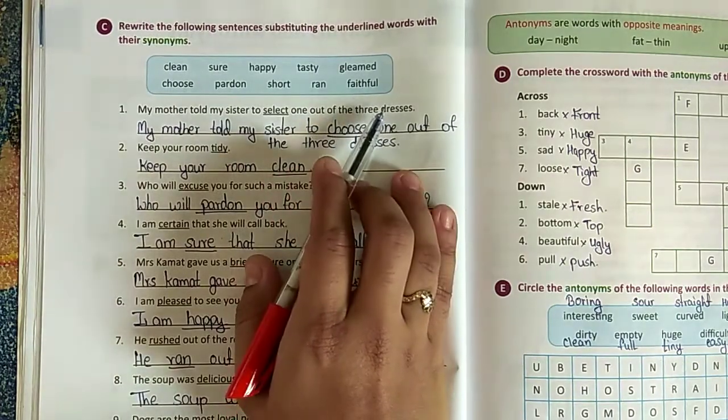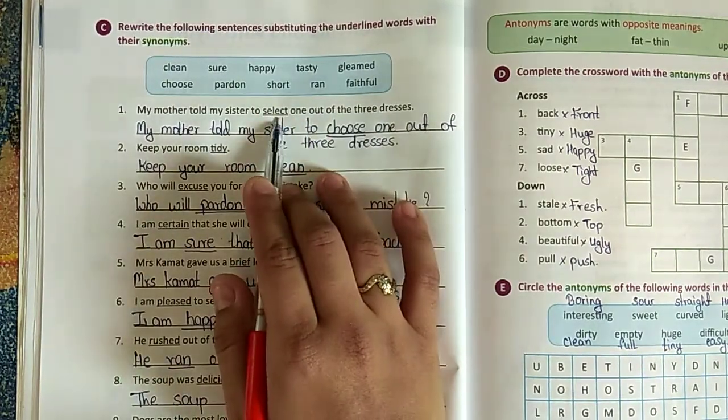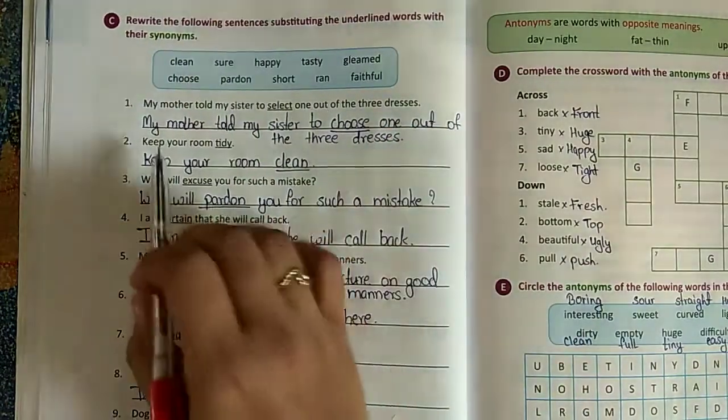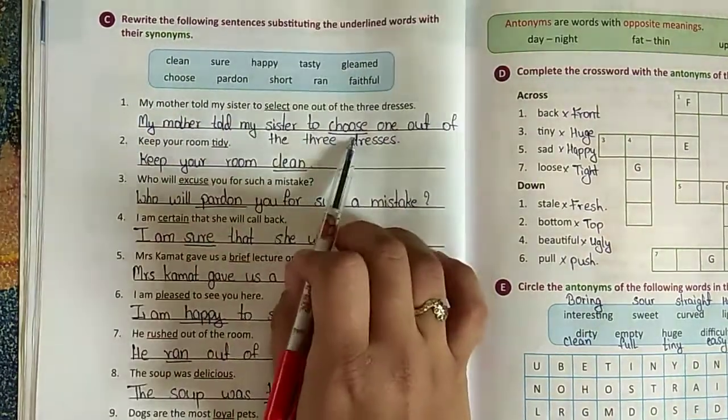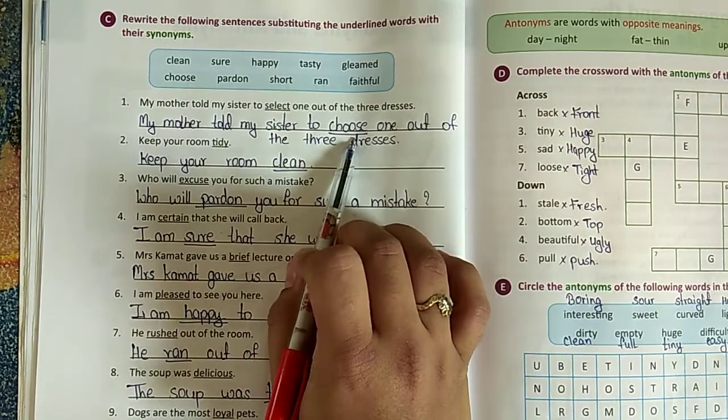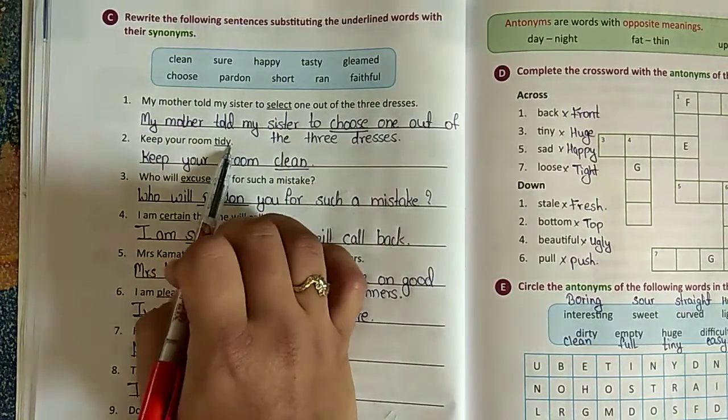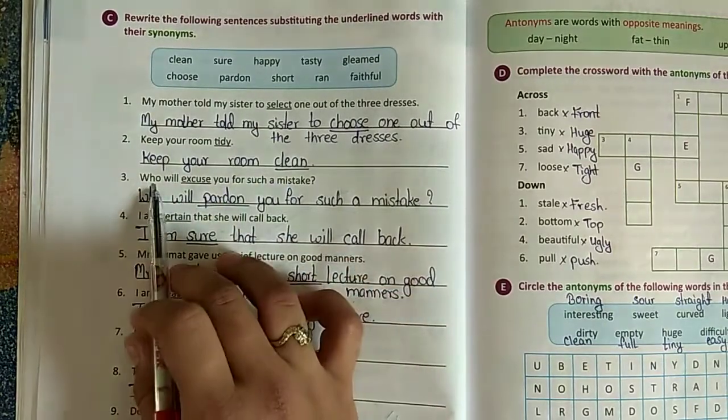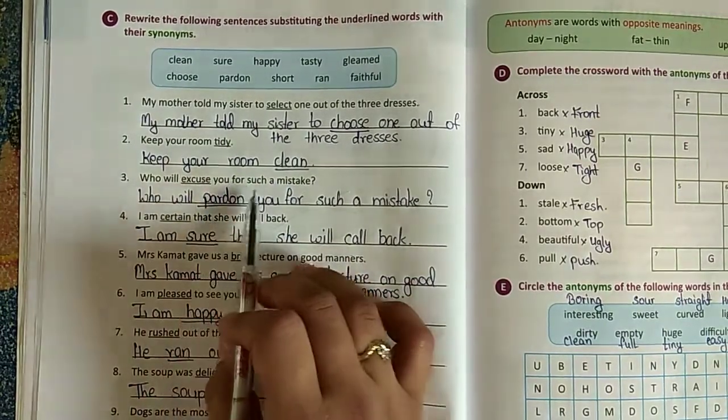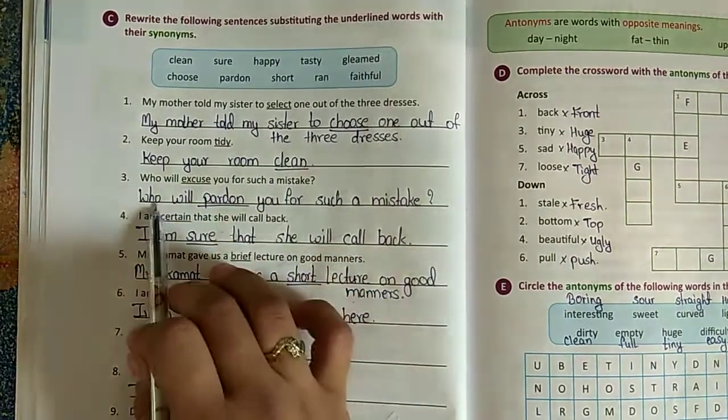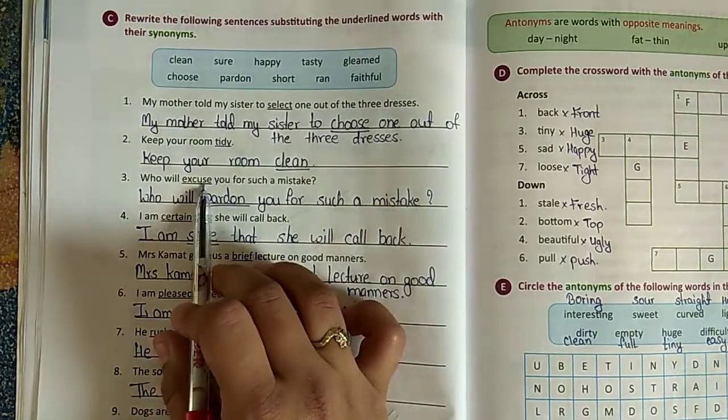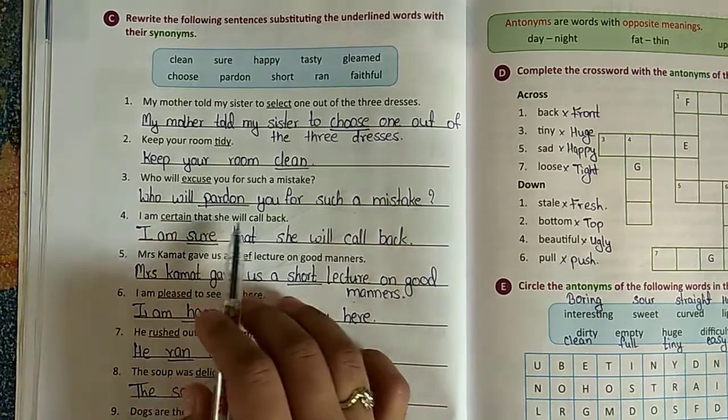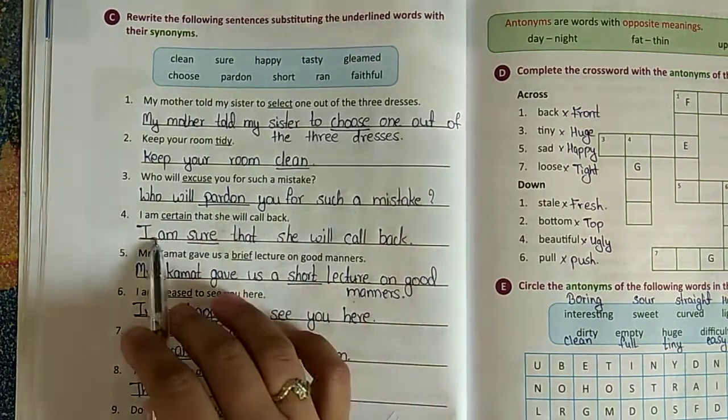First: my mother told my sister to select one out of the three dresses. Select means choose karna hai - choose one dress. So select will become choose. Keep your room tidy - keep your room clean. Who will excuse you for such a mistake? Who will pardon you? Excuse ka synonym kya hai? Pardon.